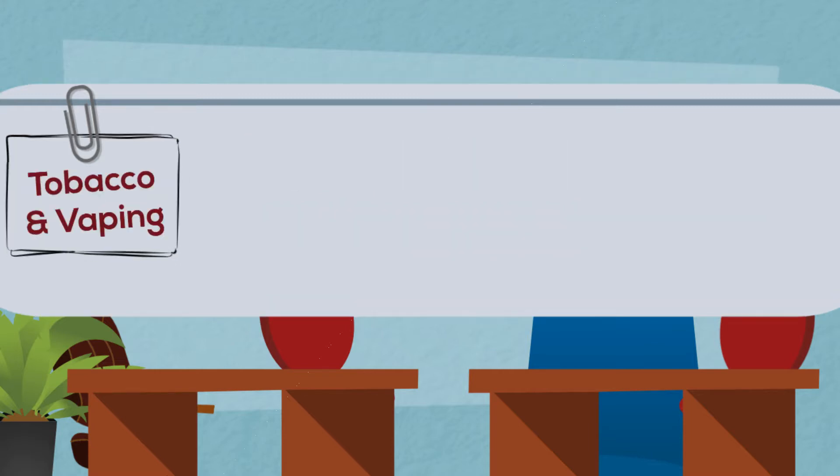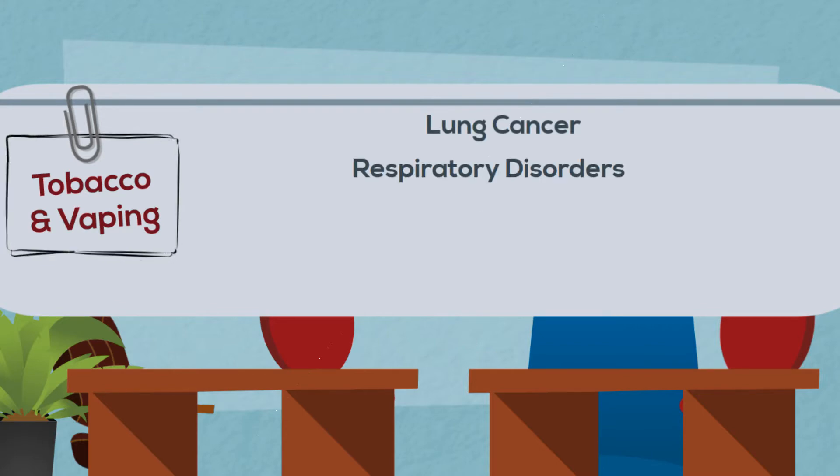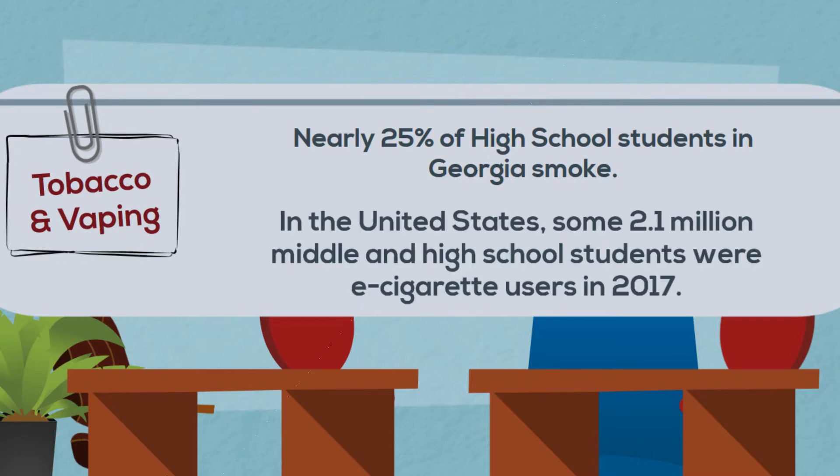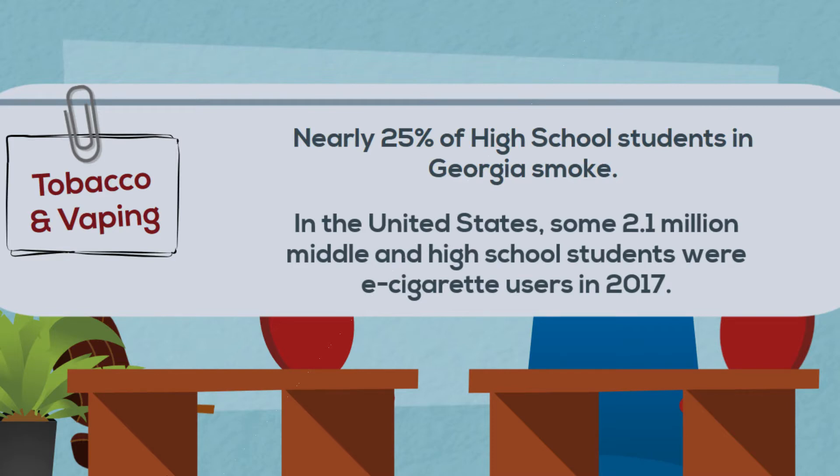Tobacco use and smoking do damage to nearly every organ in the human body, often leading to lung cancer, respiratory disorders, heart disease, stroke, and other illnesses. Nearly 25% of high school students in Georgia smoke. E-cigarettes are now the most frequently used tobacco product among adolescents. Some 2.1 million middle and high school students were e-cigarette users in 2017.